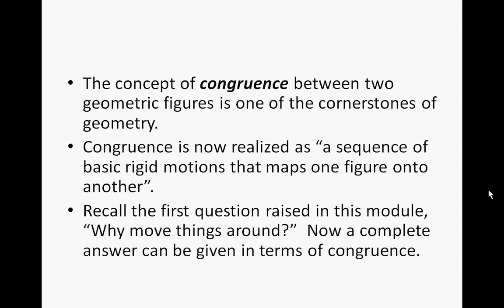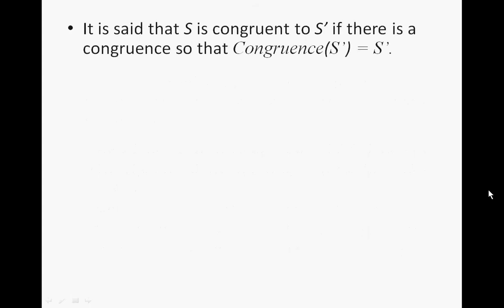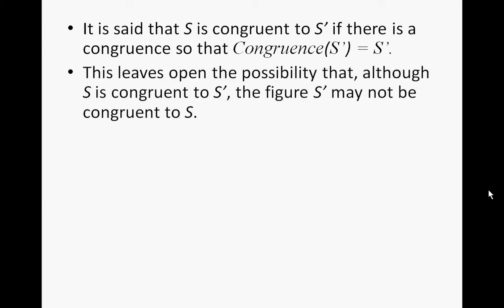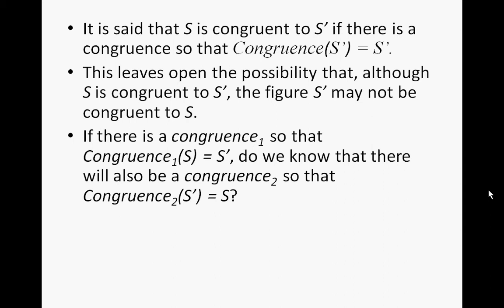Recall the first question raised in this module: why do we move things around? Now a complete answer can be given in terms of congruence. It is said that S is congruent to S prime if there is a congruence such that the congruence of S equals S prime. This leaves open the possibility that although S is congruent to S prime, S prime may not be congruent to S. If there is a congruence one so that S maps to S prime, do we know there will also be a congruence two so that S prime maps back to S?